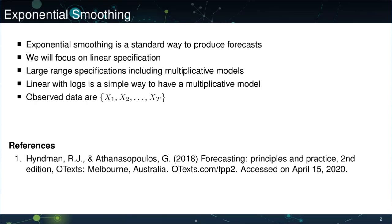Exponential smoothing is a standard way to produce forecasts across a wide range of domains. It's very simple, often involves a small number of parameters, and can adapt to situations where data are non-stationary. Here, we will focus on the linear specification, also known as additive exponential smoothing models.